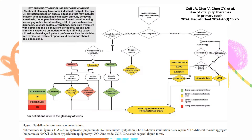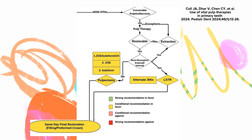This is an updated flowchart from Cole's 2024 publication on pulp therapy. We're going to follow the non-vital track for a tooth that has irreversible pulpitis or necrosis. Pulp therapy is indicated if the tooth is restorable. If there is root resorption — external or internal — that is going to put us at the LSTR track, which uses a three-mix medication paste.